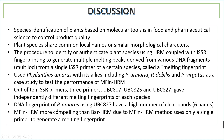DNA fingerprinting of P. amarus using UBC827 showed the highest number of clear bands — six bands — and UBC825 also showed six clear bands. MFin-HRM is more complex than barcoding because the MFin method uses only a single primer to generate the melting fingerprint.